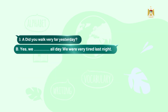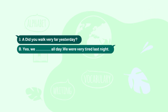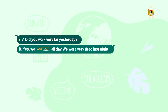Number three. A: Did you walk very far yesterday? B: Yes, we went on all day. We were very tired last night. Note that the verb go on was changed to went on to match the past tense. The question asks 'did you walk very far yesterday?' and the answer is 'yes, we went on all day and were very tired.'